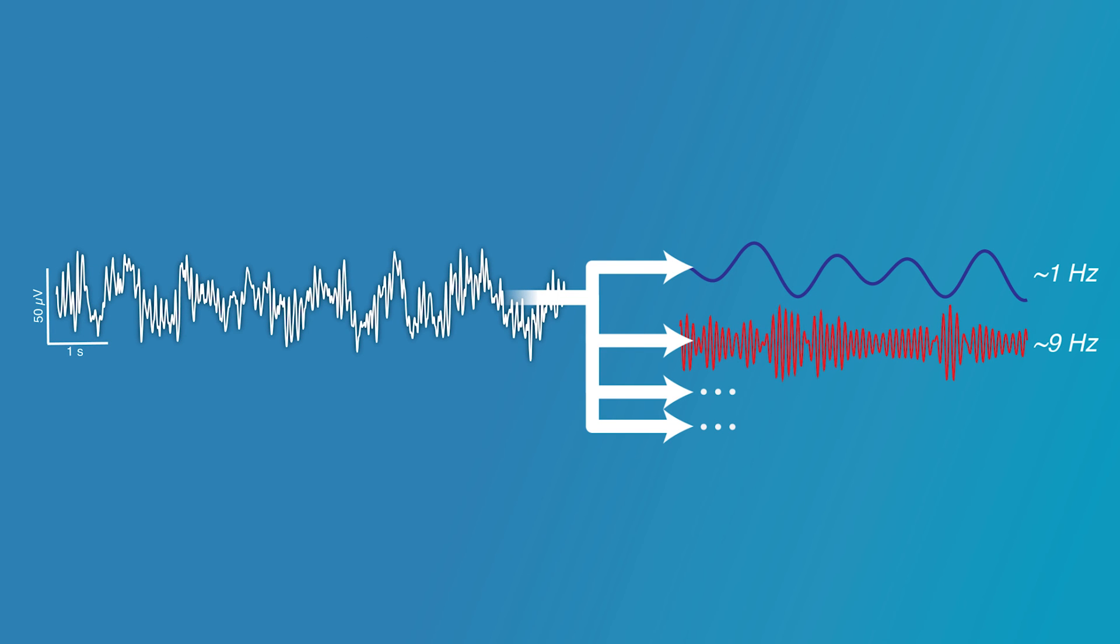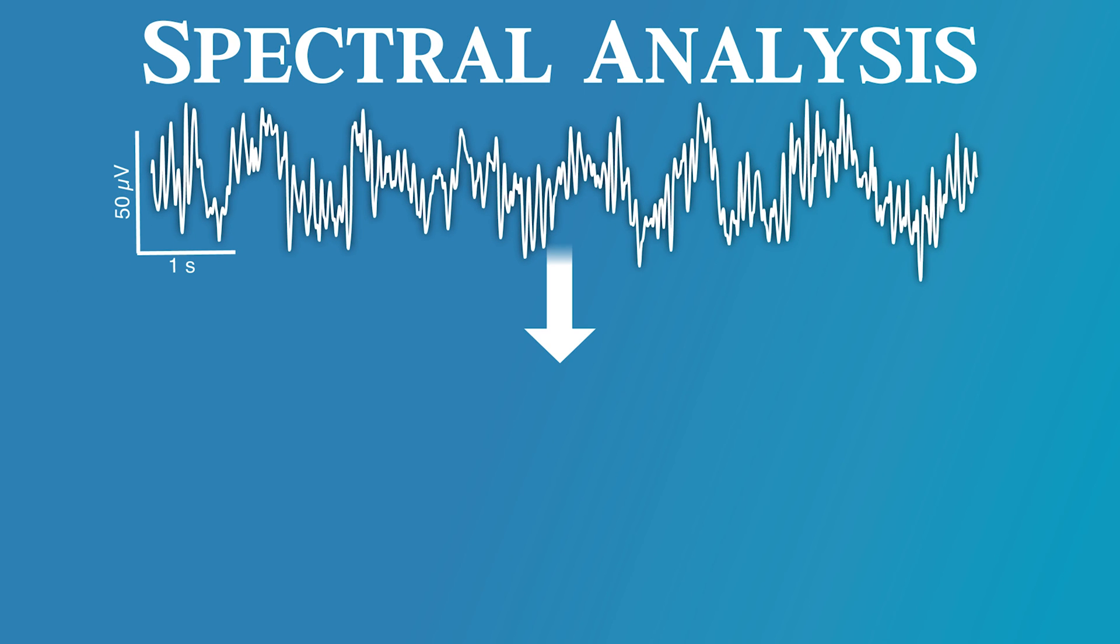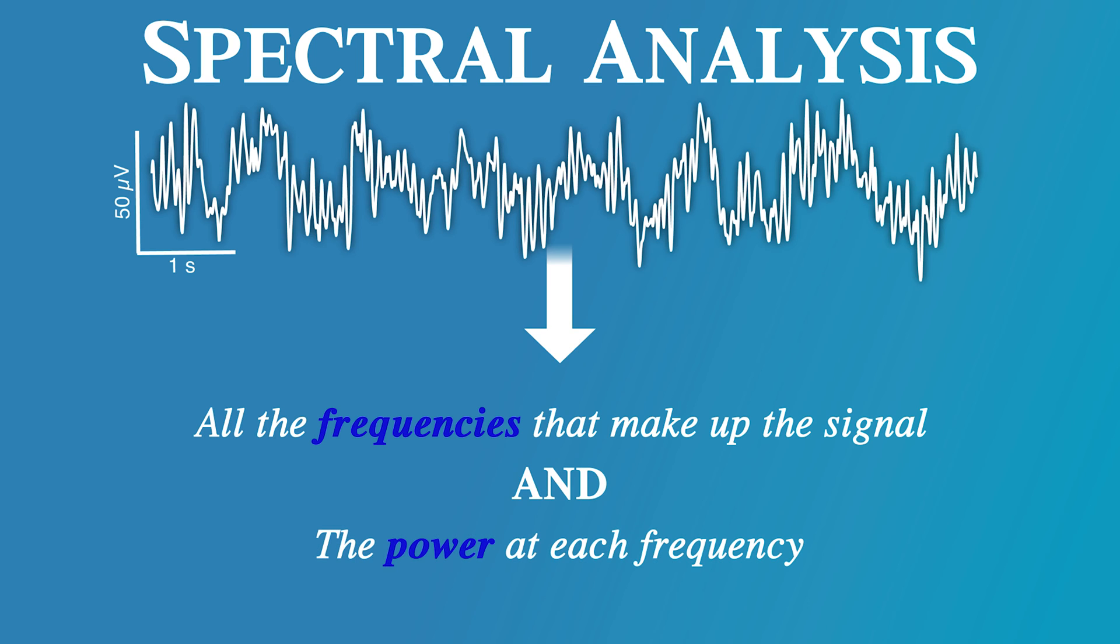With practice, you may eventually learn to identify the individual frequency components of the waveform, but luckily, spectral analysis can make this process much faster and more precise. Within a window of time, spectral analysis mathematically decomposes the EEG signal into all the frequencies that make it up. In addition, it calculates the power at each frequency. Power reflects the amplitude of the wave.